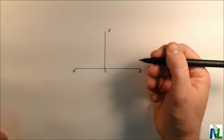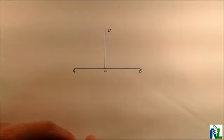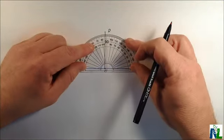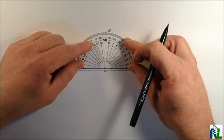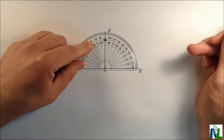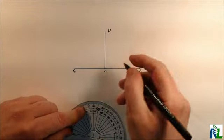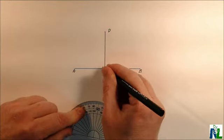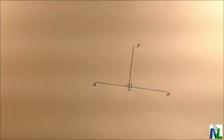And DC is going to be perpendicular to AB. Let's check using the protractor. So angle DCB or angle DCA are certainly 90 degree angles. So those two line segments are perpendicular.